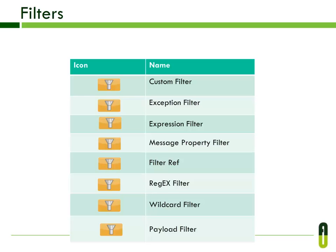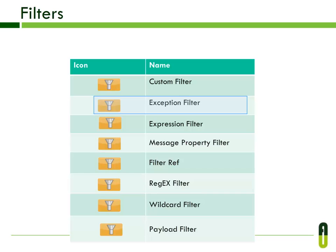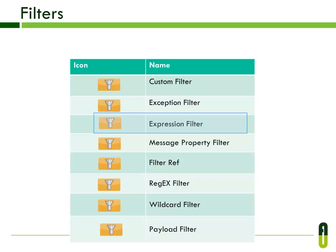Here you can see the different types of filters. The Custom filter allows user-implemented filtering; you can create your own filter by implementing the filter interface. The Exception filter matches an exception type. The Expression filter evaluates expressions using evaluators such as XPATH, JXPATH, OGNL, and custom evaluators. The Message property filter adds logic to routers based on message property values, exposing transport-specific or user-defined properties.